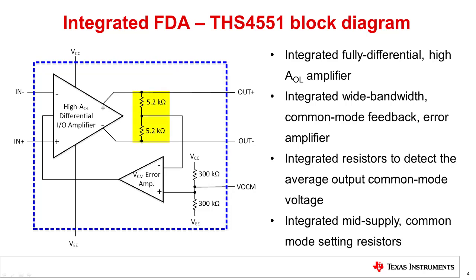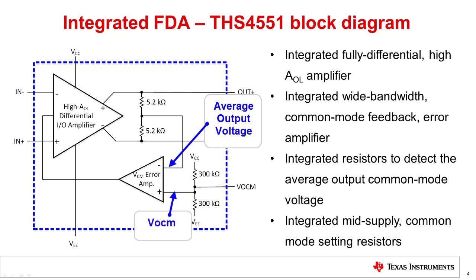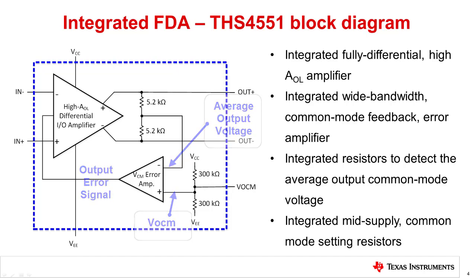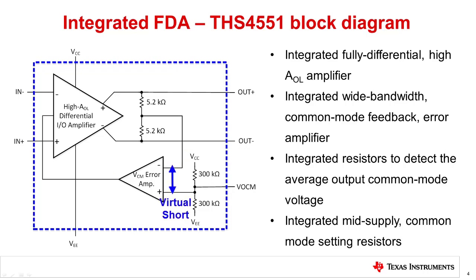The integrated 5.2 kiloohm resistors detect the feed forward amplifier's average output voltage, or in other words, its common mode voltage. It then compares this average voltage against the DC voltage at its non-inverting pin and adjusts its output voltage, which subsequently feeds into an internal bias node of the feed forward amplifier. An op amp in a negative feedback loop ideally has the same voltage at its inverting input and its non-inverting input. The negative feedback of the error amplifier therefore acts as a servo loop, adjusting the internal bias node of the feed forward amplifier until the voltage at its inverting input is equal to VOCM.